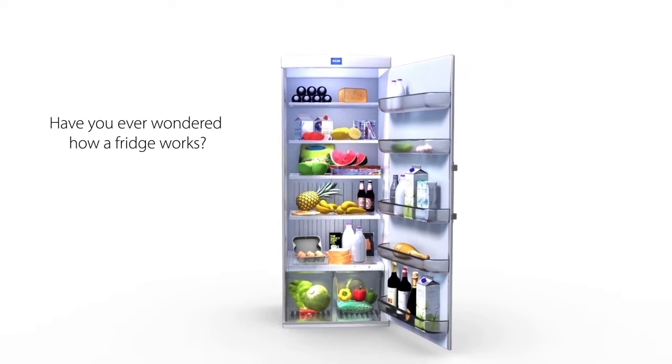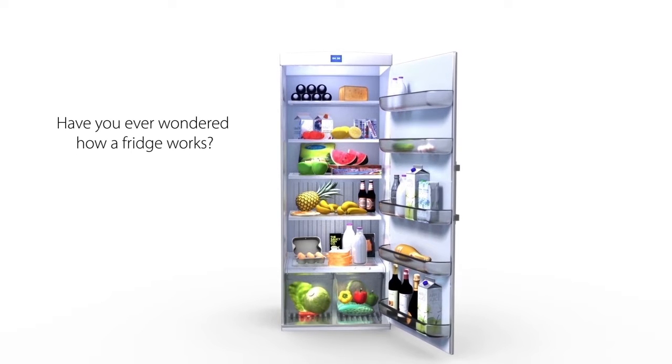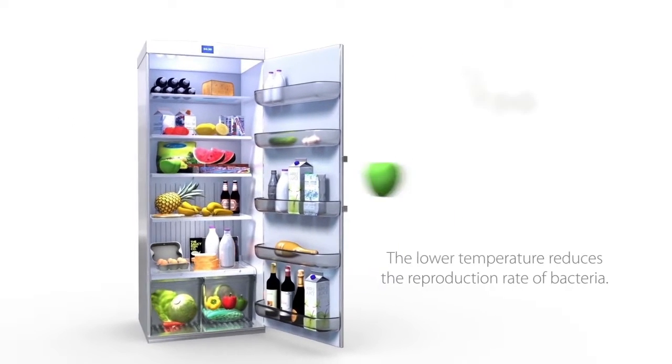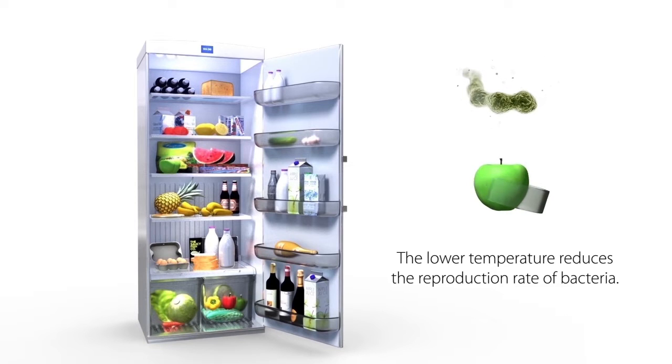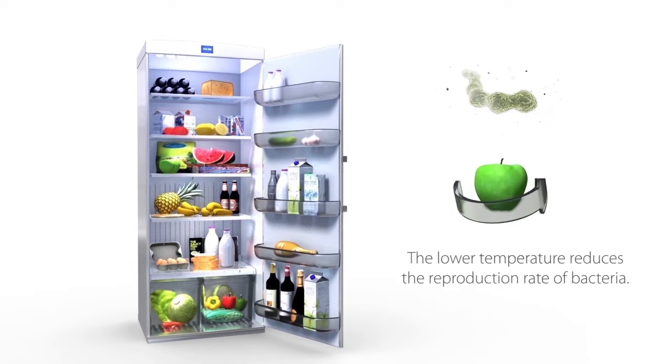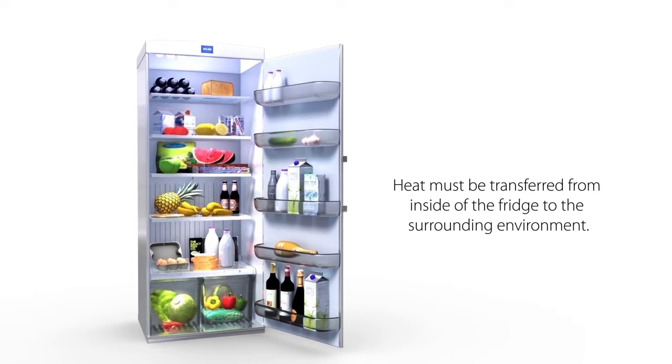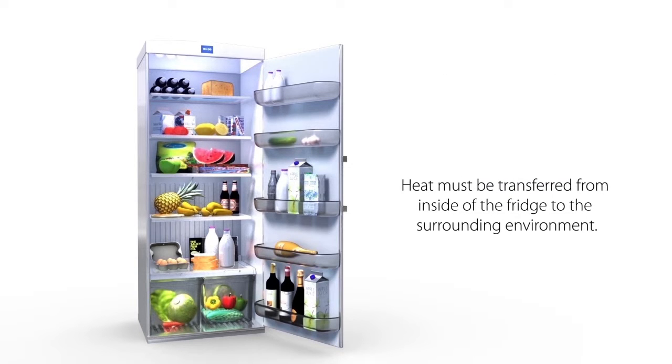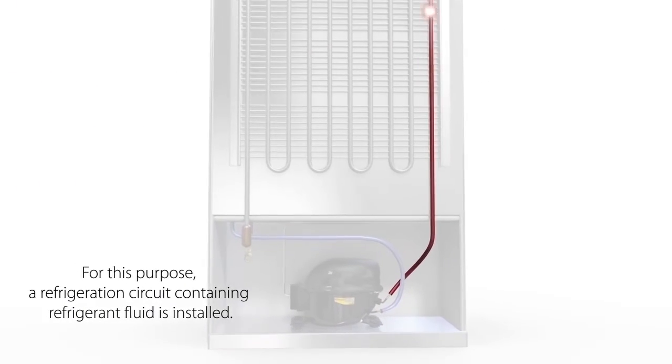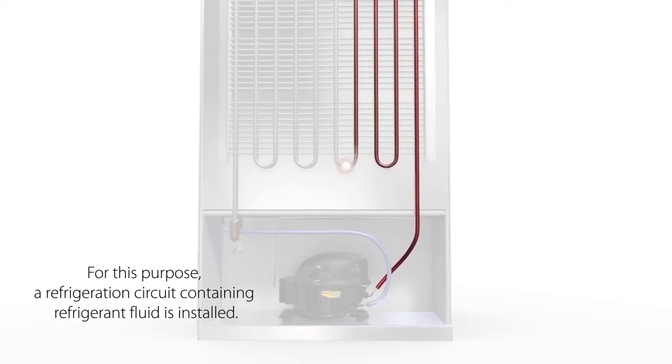Have you ever wondered how a fridge works? The lower temperature reduces the reproduction rate of bacteria. Heat must be transferred from inside of the fridge to the surrounding environment. For this purpose, a refrigeration circuit containing refrigerant fluid is installed.